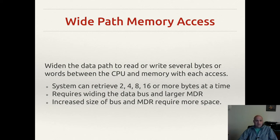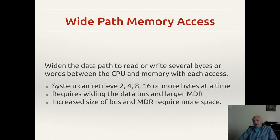Doing this makes the data bus much larger because we need more lines to accommodate bringing information. Most importantly, it also means we need a much wider memory data register, because the memory data register holds the results of what we retrieve from memory so the CPU can access them. Our memory address register needs to be the correct size to address all memory we want to access, while our memory data register needs to be the correct size to retrieve however much data we're going to pull out of memory at one time.